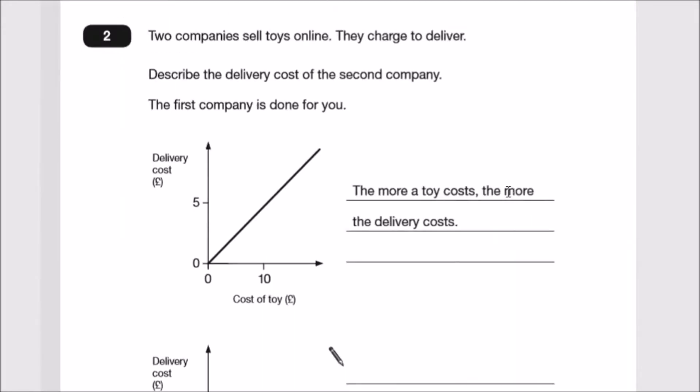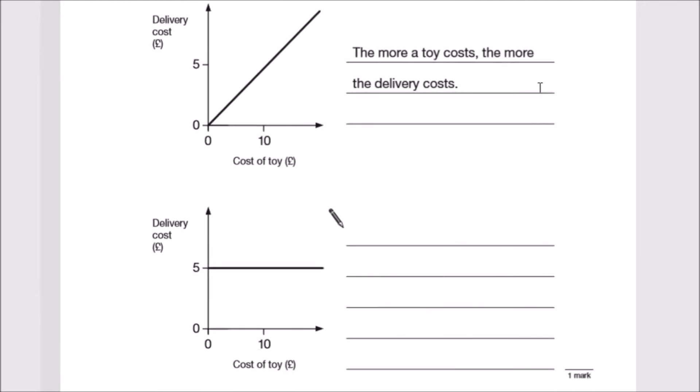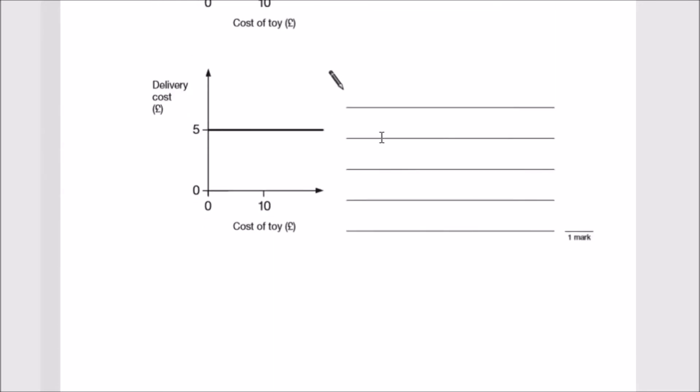Number two: Two companies sell toys online and charge for delivery. Describe the delivery cost of the second company. The first one's been done for you. We just have to talk about the relationship between the x and y axis. This one cuts through the origin with a very even slope, so the more the toy costs, the more the delivery cost. When the toy costs 10, delivery is 5; when you don't buy nothing, it's 0.